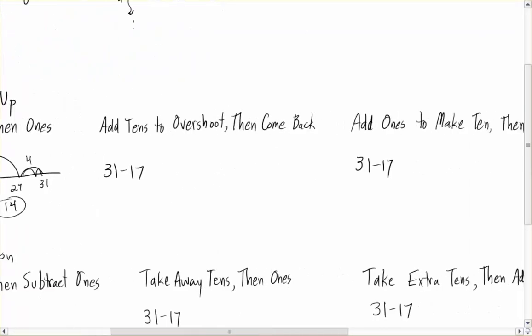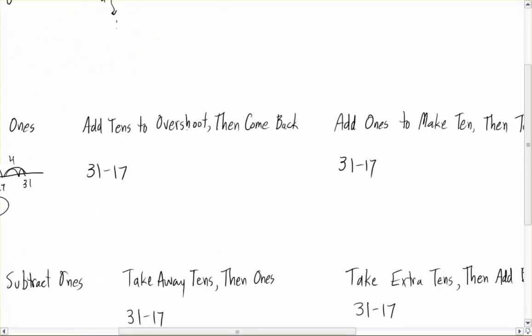A similar one but slightly different: adding tens to overshoot and then coming back. So if I start at 17 here and I'm going to 31, I can add 10 and get myself to 27. I add another 10 and get myself to 37. Oh, I overshot 31. So now I just need to move back 6 and I know that that'll get me to 31. How far did I go? I went up 20 and back down 6. That's 14.